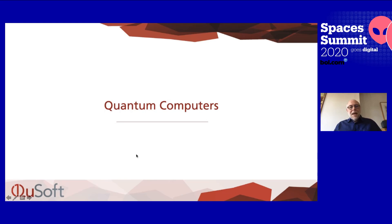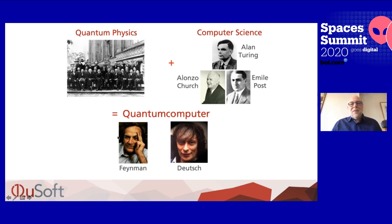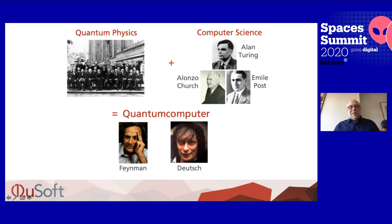Those are the three principles: superposition, interference, and entanglement. Now let me tell you about quantum computers — that's when you take these two things together: quantum physics and computer science, which was developed by Alan Turing, Alonzo Church and Emil Post. When you put these together you get the quantum computer. It took until the 1980s when Feynman and Deutsch realized this. David Deutsch came up with a rigorous formulation of what a quantum computer is, analogous to what Alan Turing did in the 1930s — so 50 years later.